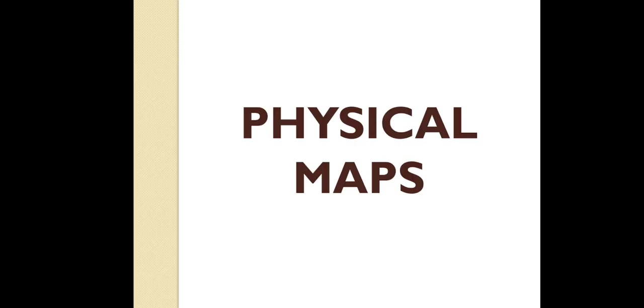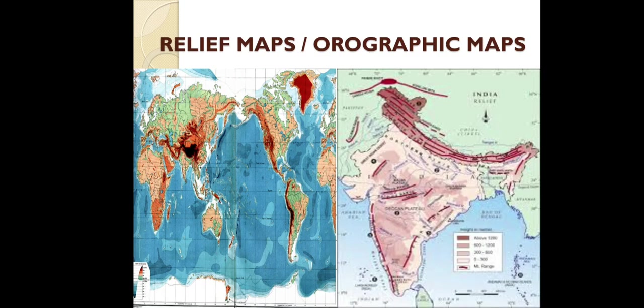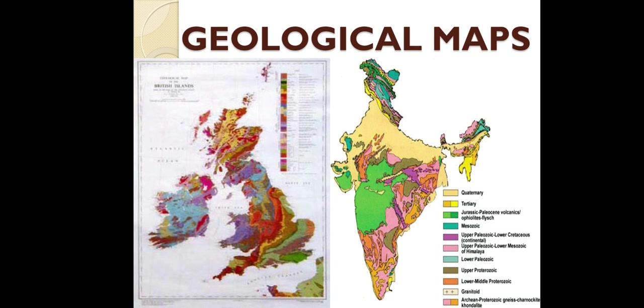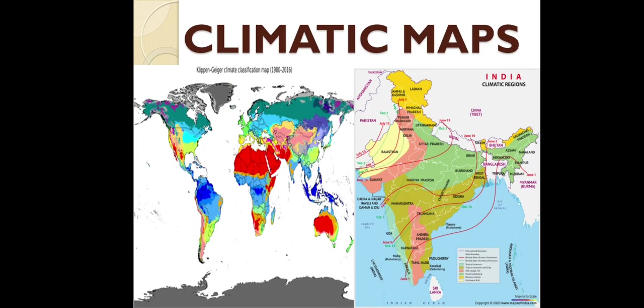First, physical maps provide details about the natural features of an area or country. The first type is the relief map or orographic map, which shows surface features like mountains, plains, plateaus, and drainage patterns. Second is the geological map, which shows the distribution of various rocks. Third is the climatic map, which shows the average condition of temperature, pressure, wind and precipitation of the world or a part of it over a long period of time.